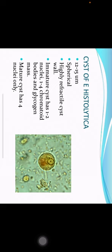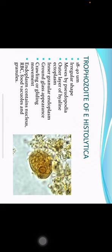Trophozoites of Entamoeba histolytica: 18 to 40 micrometers in dimension, irregular in shape. They move by pseudopodia and have an outer layer of hyaline ectoplasm and an inner layer of granular endoplasm. The appearance is ground glass. Motility is of the rolling or gliding type. Inside the endoplasm, the nucleus can be seen, as well as RBC-containing food vacuoles and granules.